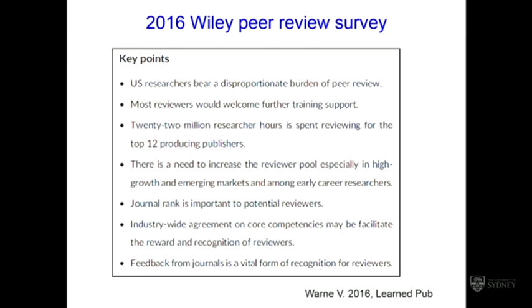This figure comes from a survey published this year — a survey into peer reviewer attitudes conducted by the scientific publisher Wiley, published in a journal called Learned Publishing. It received responses from nearly 3,000 researchers and revealed that US researchers were conducting a disproportionate amount of peer review. In total, they calculated 22 million researcher hours spent reviewing for the top 12 publishing houses — a tremendous effort. It concluded there's a need to expand the reviewer pool, particularly in high-growth and emerging markets and amongst early career researchers.